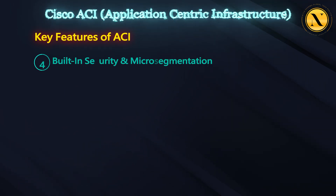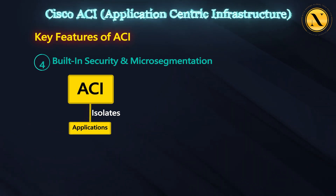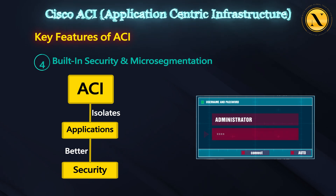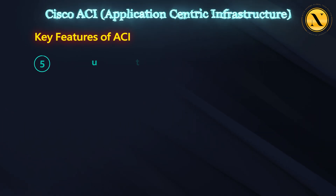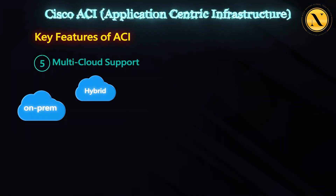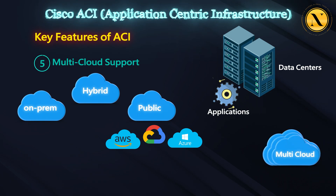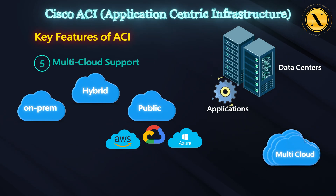Built-in security and micro-segmentation: ACI automatically isolates applications for better security and prevents unauthorized access within the data center. Multi-cloud support: ACI can work with on-prem, hybrid, and public clouds, making it easier to move applications between data centers and cloud platforms.